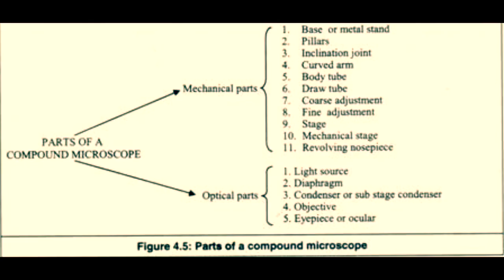Present day compound microscopes can be classified into two parts: the mechanical and the optical. With the mechanical consisting of base, pillars, inclination joint, curved arm, body tube, draw tube, coarse adjustment, fine adjustment, stage which may be fixed or mechanical, and revolving nose piece.